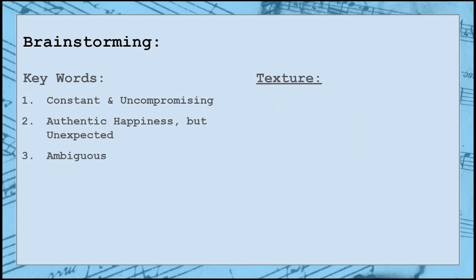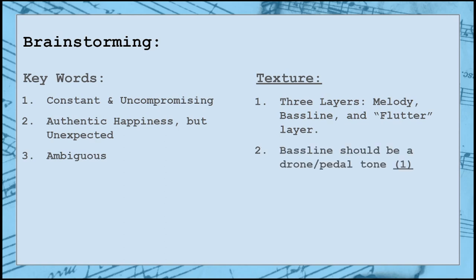Next is texture, which simply refers to the number and types of layers in the music. I know that I want at least three different layers: the melody, the bass line, and the fluttering layer that I came up with for tempo. However, for the bass line, I think I want to work with just a simple drone or a pedal tone. Having a bass line that never or rarely changes notes could really help tie down the idea of being constant and uncompromising. It could also be really fun to just double this same idea above the melody in a high pedal or drone.